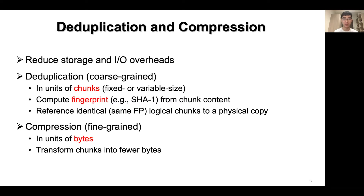Two storage techniques are widely used to reduce storage and I/O overheads in storage systems. Deduplication, a coarse-grained storage-saving technique, operates in units of chunks that are of either fixed or variable size. In this work, we focus on fixed-size chunking since it already provides good I/O deduplication ratio and fits better to Flash units. Deduplication computes fingerprints using cryptographic hash functions, for example SHA-1, based on the content of the chunks, and then references identical logical chunks that have the same fingerprints to one physical copy. In practice, the collision rate for fingerprints can be neglected.